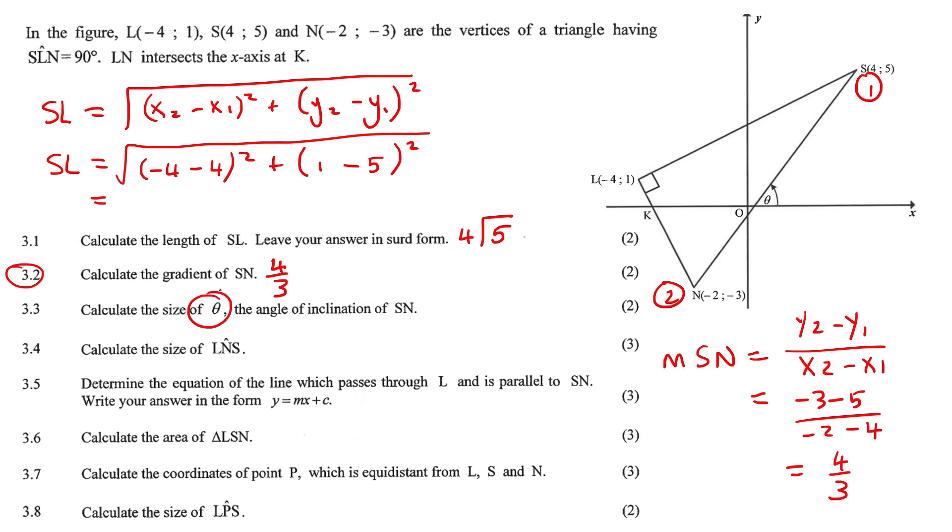Calculate the size of theta. Okay, so we've spoken about this before. We know that if you have gradient, then we can use tan to get inclination. So we can just simply say shift tan of the gradient, and that'll give us the angle. 53.13 degrees. There we go.